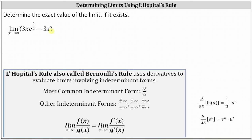Let's first analyze the form of the limit as x approaches infinity. As x approaches infinity, one divided by x is approaching zero, which indicates e to the power of one divided by x is approaching e to the zero, or one, leaving us with three x times one minus three x as x approaches infinity. And since x is approaching infinity, we have the indeterminate form of infinity minus infinity.